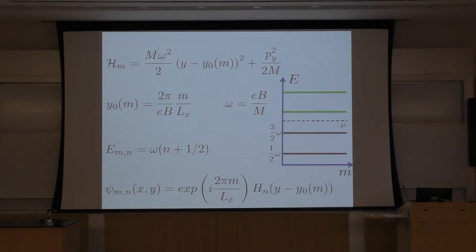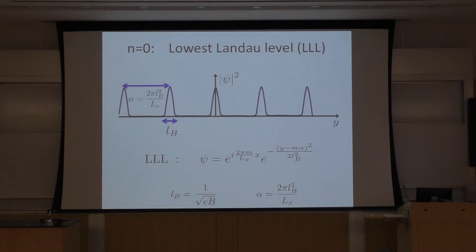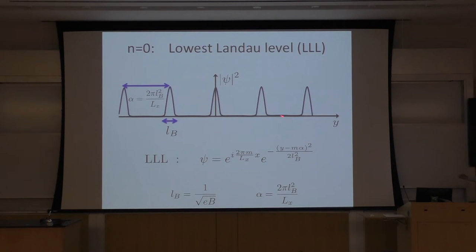For M equals zero, I have one Gaussian for the lowest Landau level because the Hermite function reduces to a Gaussian for N equals zero. For M equals one, I have a different Gaussian, for M equals three, and so on. The distance between two peaks is inversely proportional to Lₓ, and the width of each Gaussian is L_B, where L_B is the magnetic length one over sqrt(eB). What is the degeneracy of each Landau level? By changing M, energy does not change. The center of oscillation must be inside the system, so y₀ must be between -L_y/2 and +L_y/2. This constrains M, and the number of allowed M values is G = Φ/Φ₀, the total flux divided by the flux quantum hc/e.